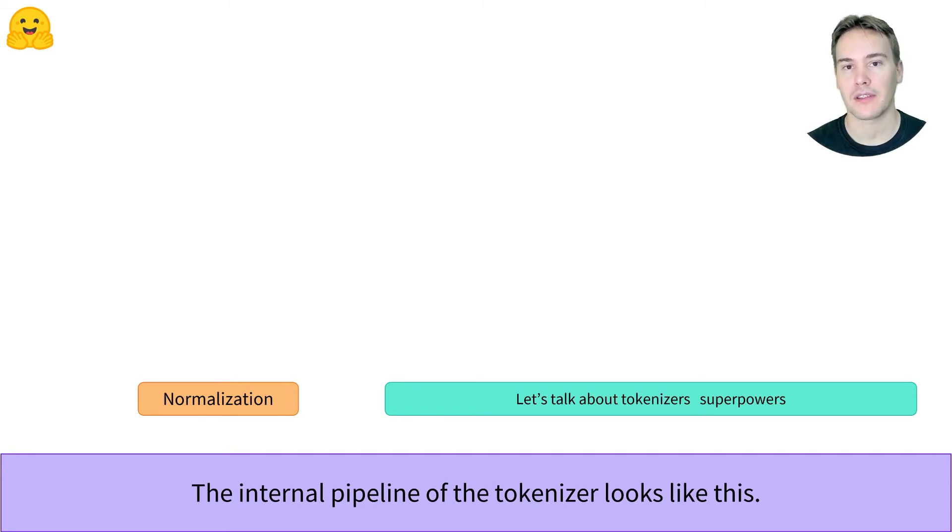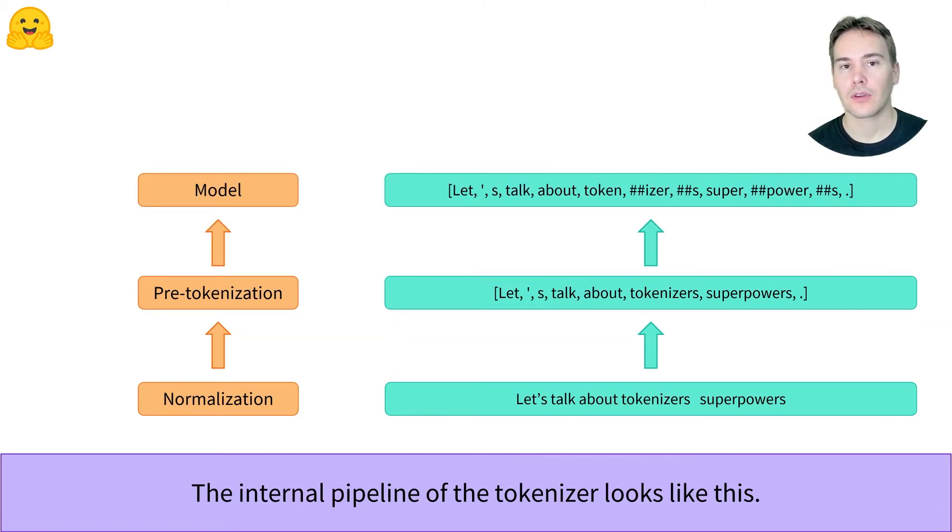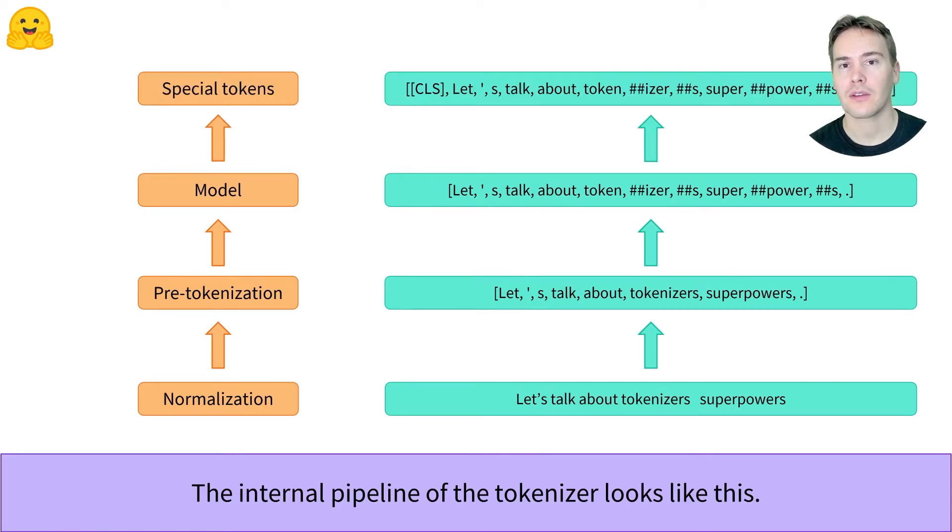The internal pipeline consists of normalization, where we apply some cleaning to the text like lower casing or removing the accents, pre-tokenization, which is where we split the text into words, then we apply the model of the tokenizer which is where the words are split into tokens, before finally doing the post-processing where special tokens are added.